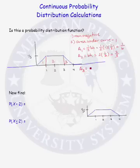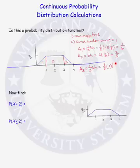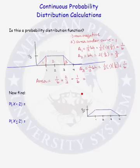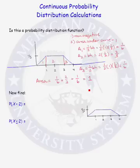Region 3 is also a triangle, so the area is one-half base times height. The length of the base is 1 and the height is 1/3, so the area of region 3 is also 1/6. The area under the curve equals the area of region 1 plus region 2 plus region 3, and it does equal 1. So we do have a probability distribution function.